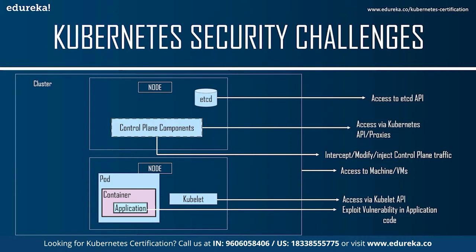There are various ways an attacker could attempt to compromise your Kubernetes cluster and the applications running on it. The diagram on screen shows several vulnerabilities: easy access to the etcd API, access via the Kubernetes API or proxies, intercepting or modifying control plane traffic, access to machines or VMs, access via the kubelet API, and exploiting vulnerabilities in application code. All these risks can cause a great deal of data loss for your organization.